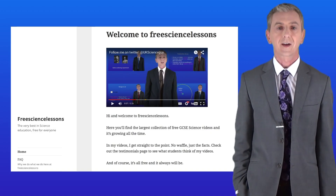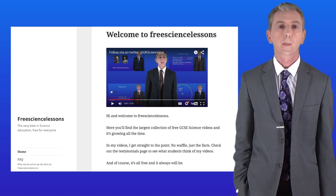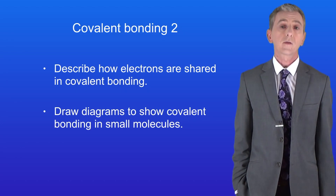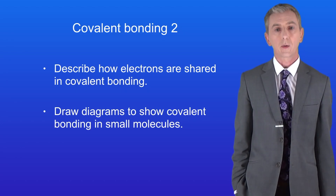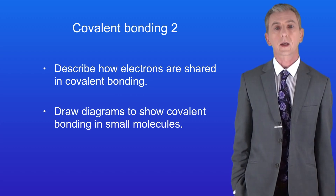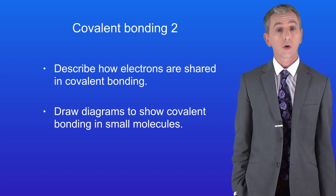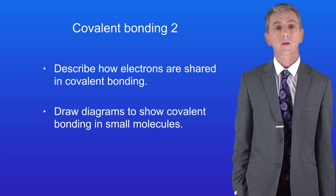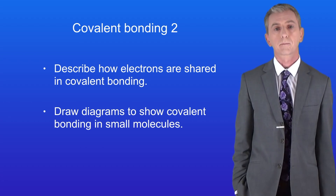Hi and welcome back to freesizelessons.co.uk. By the end of this video you should be able to describe how electrons are shared in covalent bonding. You should then be able to draw dot and cross diagrams to show covalent bonding.